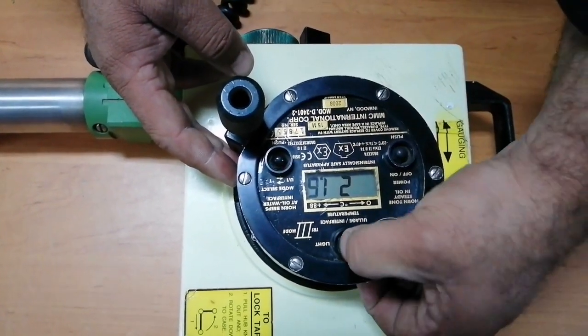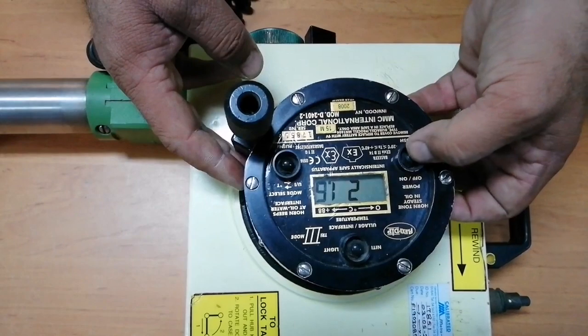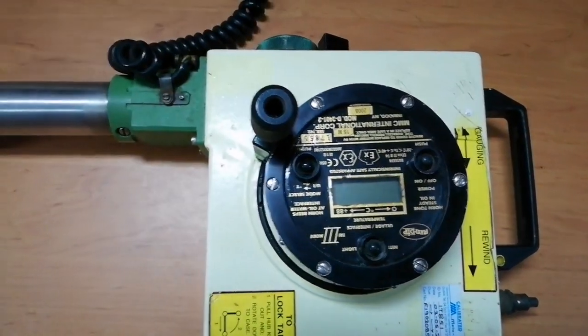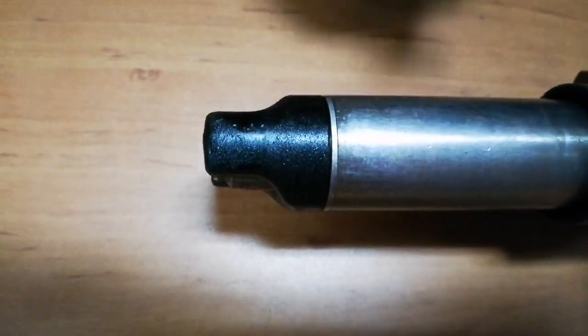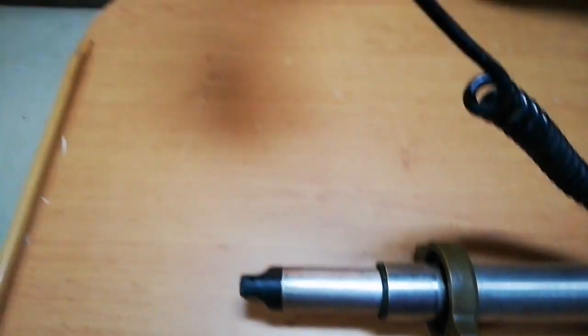Here you can see the LED. This one is the probe, and at the end of the probe you can see two sensors. One sensor is for the oil and the other sensor is for the water.